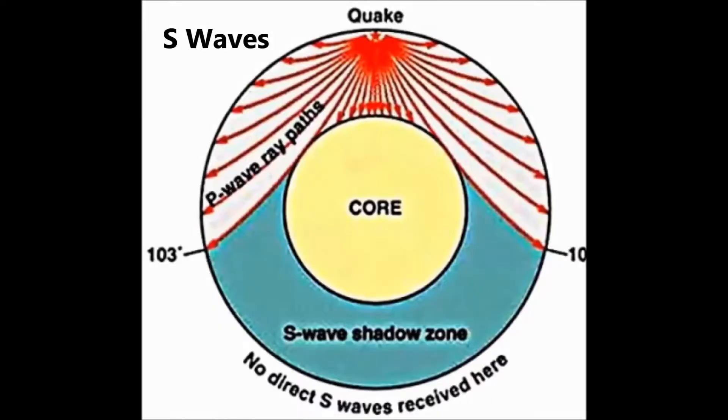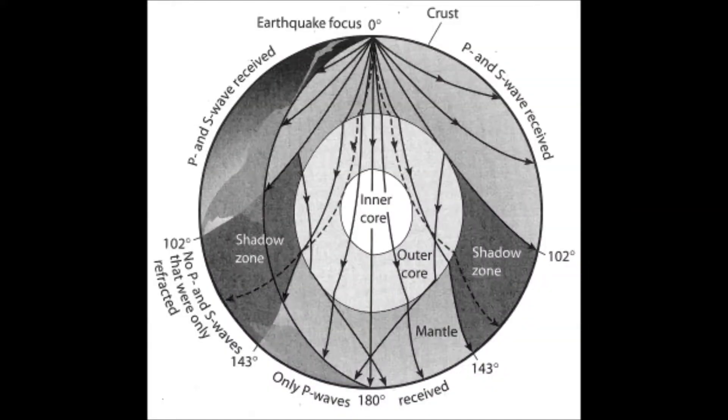And we also show diagrams like this that show how S waves travel through Earth and show S wave shadow zone on Earth. Or worse yet, sometimes you see a diagram like this that tries to show both the S wave and the P wave shadow zone, and it just gets very confusing and very difficult to understand.